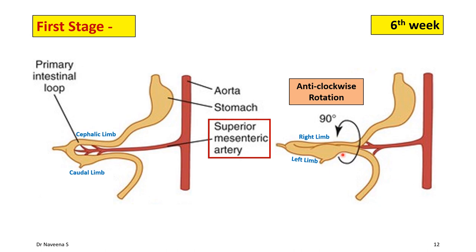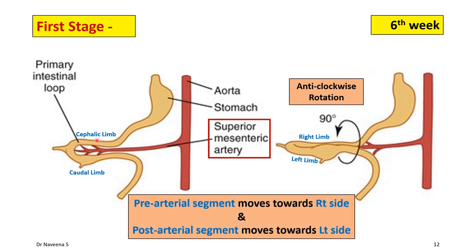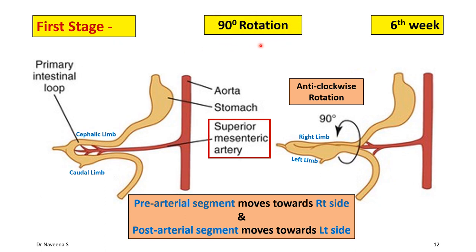The point to be noted here is that it is the pre-arterial segment which is moving towards the right side, whereas the post-arterial segment is moving towards the left side. By the end of the first stage, the primitive midgut loop shows 90 degrees of rotation towards the right side.